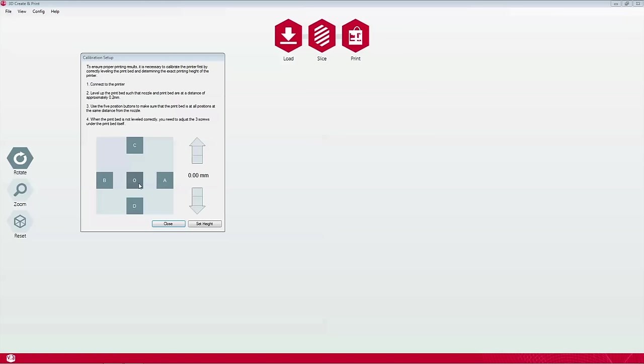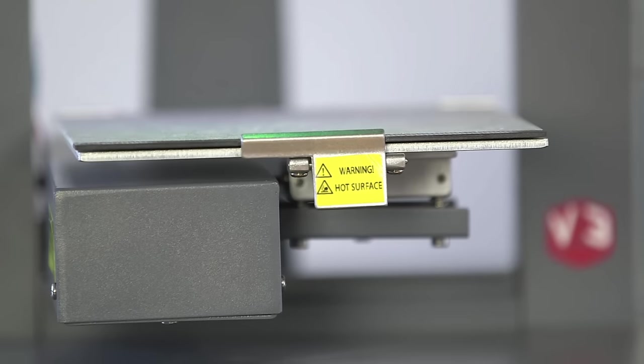The five points O, A, B, C and D correspond to the areas on the build plate where you will be checking the gap between the plate and the print nozzle. Click on each point in turn to move the plate so that you are familiar with the way it works.